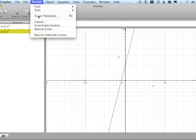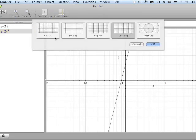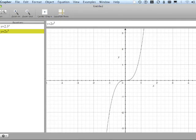I'm going to change it back. Format, Coordinate System, linear-linear, OK. And there you have it. That is using Format to change the coordinate system to look at how exponential and power functions change to linear when you change the coordinate system.